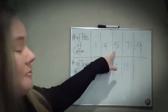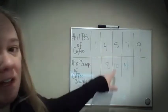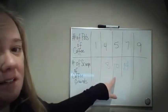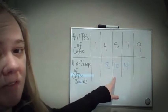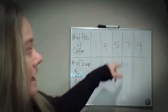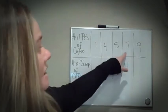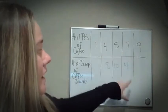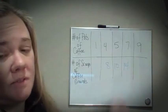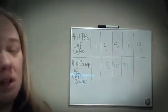For five pots of coffee, I need 10 scoops of coffee grounds. And for seven pots of coffee, I need 14 scoops of coffee grounds.